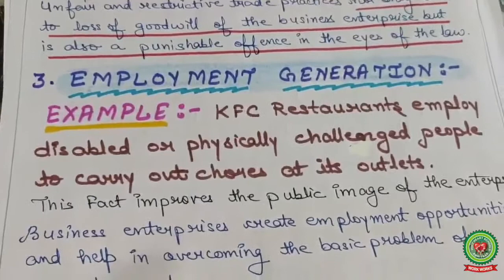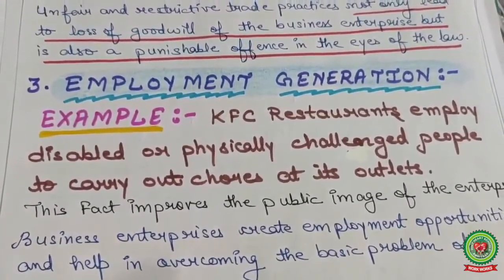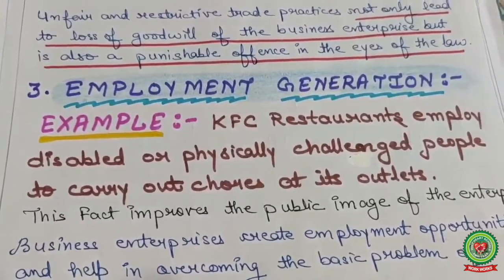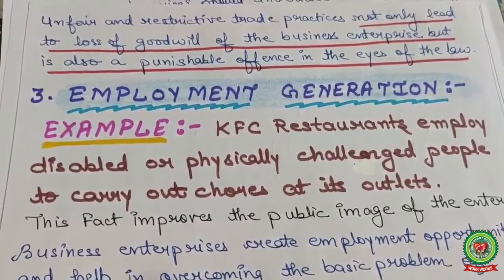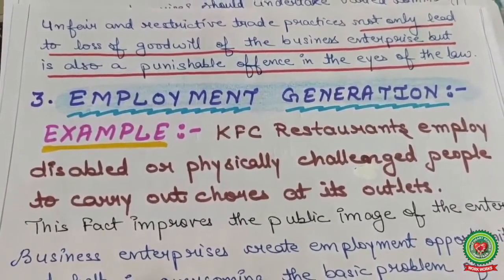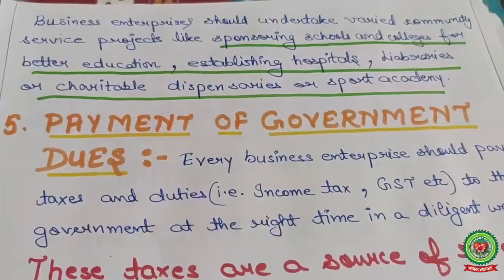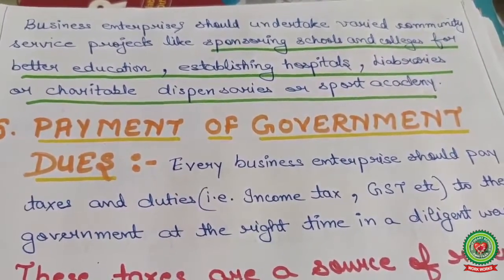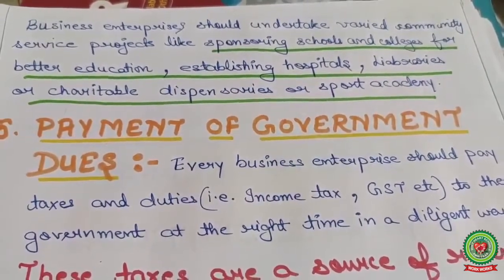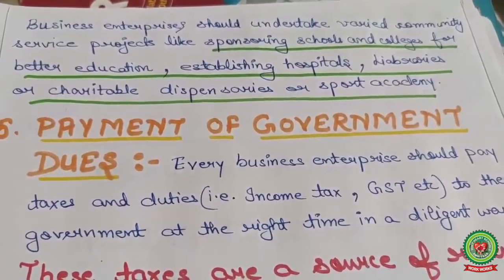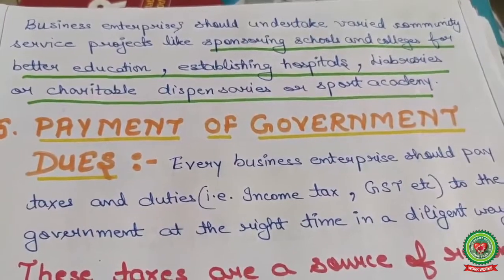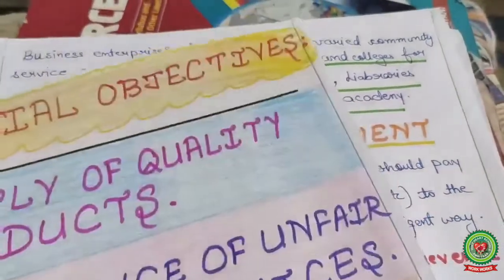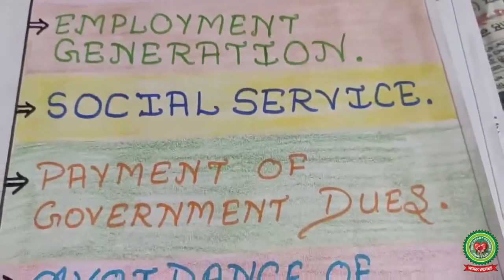Unfair and restrictive trade practices not only lead to loss of goodwill for the business enterprise but are also a punishable offense in the eyes of the law. Nowadays consumer forums are available at district, state, and national levels. NGOs are also available for social services. Business enterprises should undertake community service projects like sponsoring schools, colleges, establishing hospitals, libraries, charitable dispensaries, or sports academies, and providing scholarships to meritorious students.